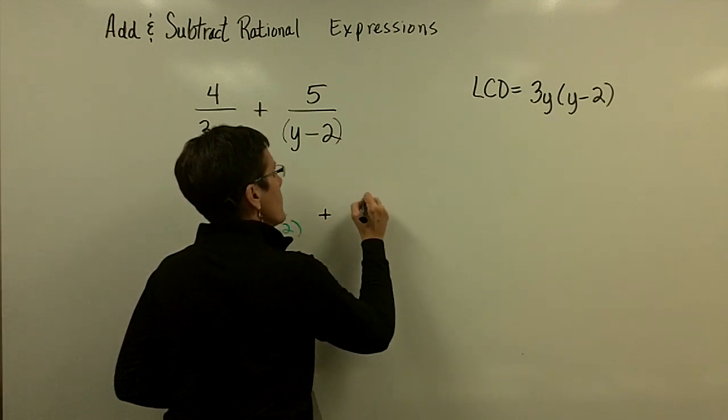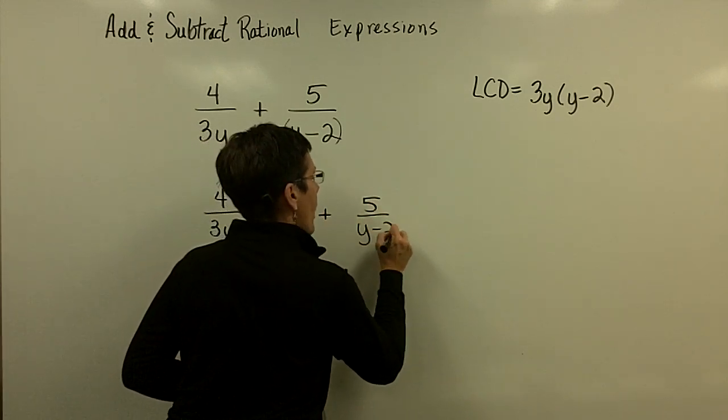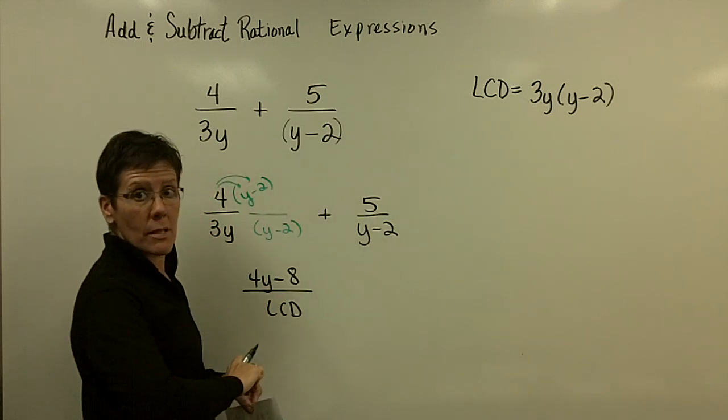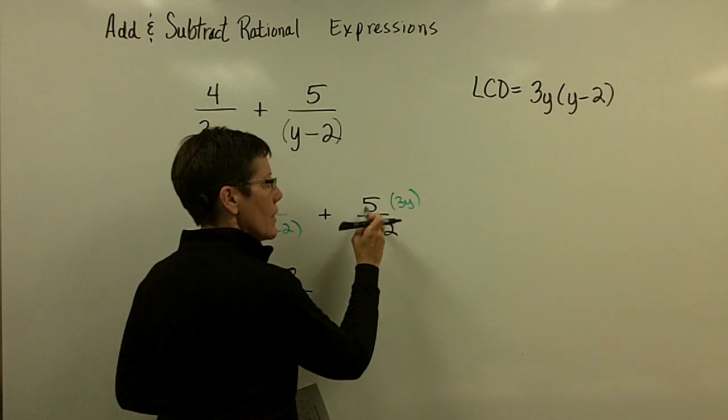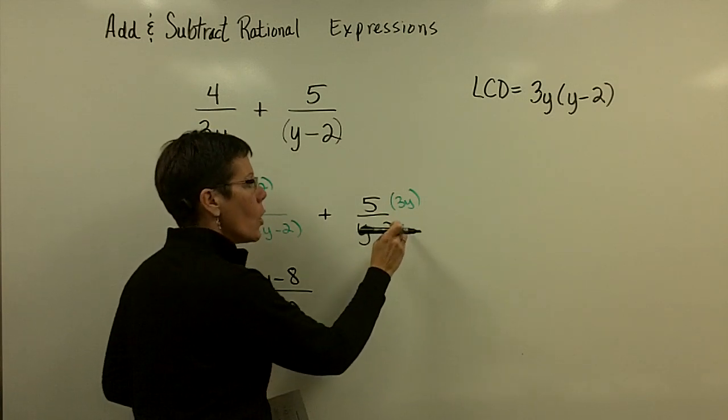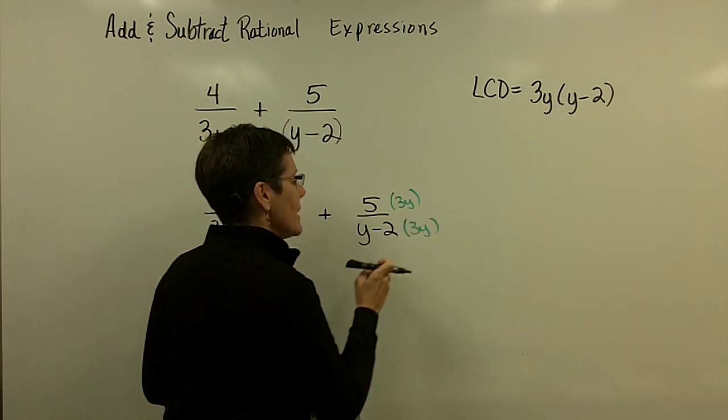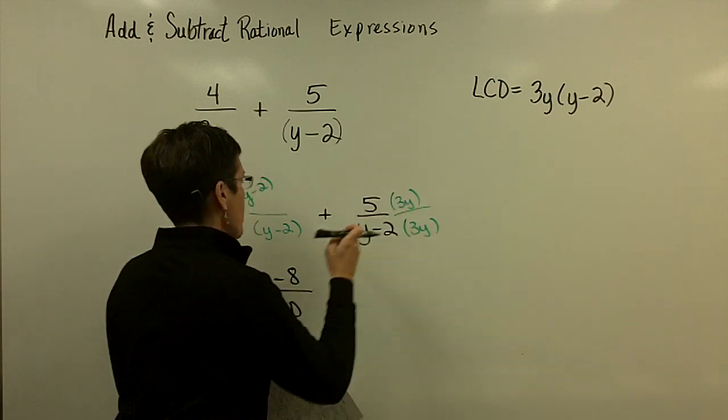And so then the second fraction, the 5 over the y minus 2, is missing the 3y. So I'm going to multiply this by 3y and that's 15y over the LCD because you multiply top and bottom.